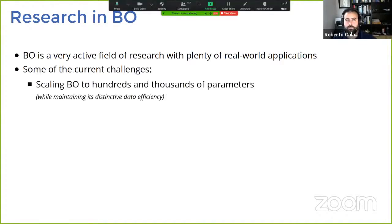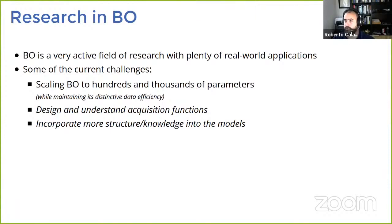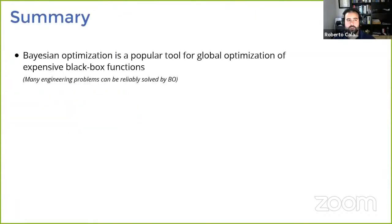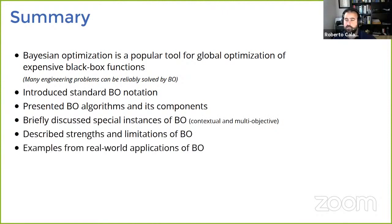To summarize: Bayesian optimization is a popular tool for global optimization of expensive black-box functions. During today's lecture, I presented the standard Bayesian optimization notation, briefly described the algorithm and its components, discussed some special instances of BO, described its strengths and limitations, and showed a couple of real-world applications. I'm now going to take questions, and if you have feedback about the lecture, please go to the website and leave feedback.